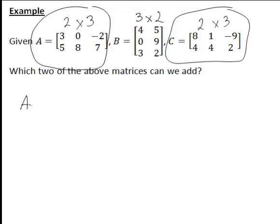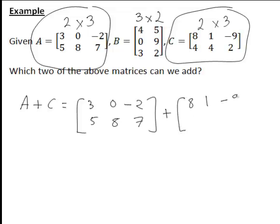So let's just do that. So A plus C is going to be equal to [3, 0, -2; 5, 8, 7] plus [8, 1, -9; 4, 4, 2].